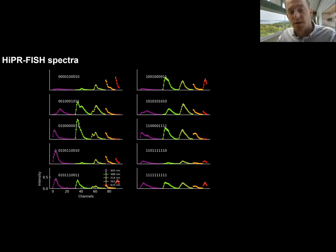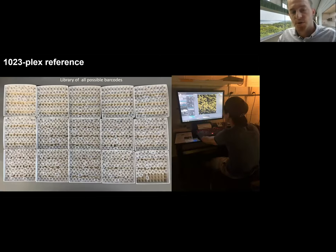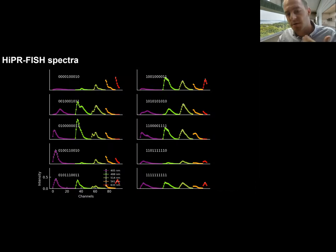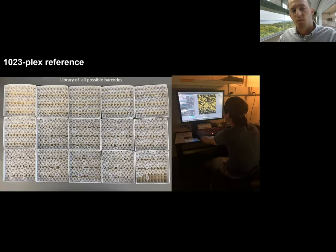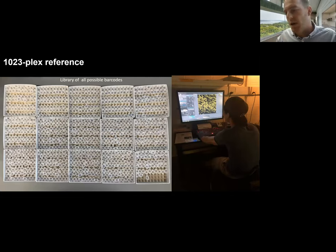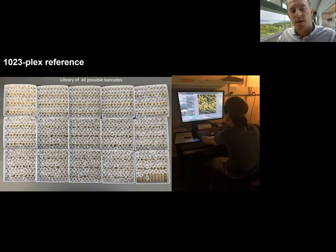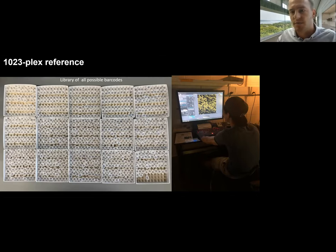To create training examples of all possible barcodes, we stained 1,023 E. coli isolates with all possible combinations of the 10 fluorophores. That required us to create a library of 1,023 different isolates with different spectral barcodes, and we also had to image them to use as examples for the barcode classifier.